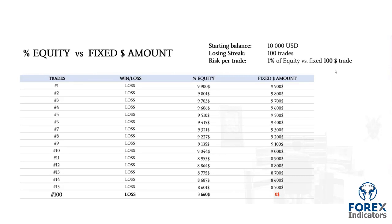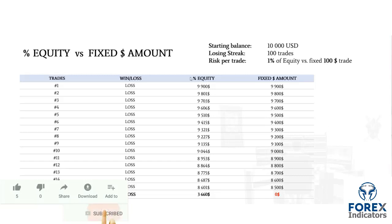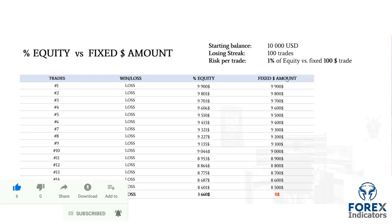Now let's take the other side: a 100-trade losing streak. Same $10,000 account, same trade count — risking 1% of equity versus $100 fixed per trade. At the end of those 100 losing trades, with the fixed percent equity model, you'd still have $3,660 left in your account. With the fixed dollar amount, your account would be blown up — nothing left. Again, fixed percent outperforms fixed dollar amount.